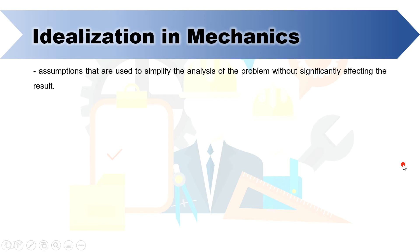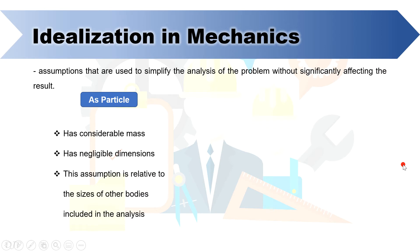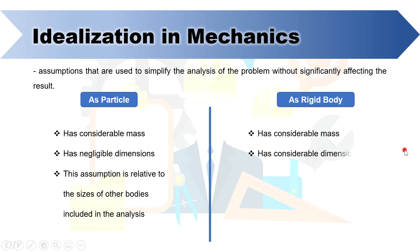So idealization in mechanics simply means assumptions that are used to simplify the analysis of the problem without significantly affecting the result. One of those idealizations is the particle that when we say as particle we mean an entity having considerable mass but negligible dimension. The next idealization is rigid body and when we talk about rigid body we mean a solid or undeformable body having considerable mass as well as dimension. It is actually a combination of large number of particles.